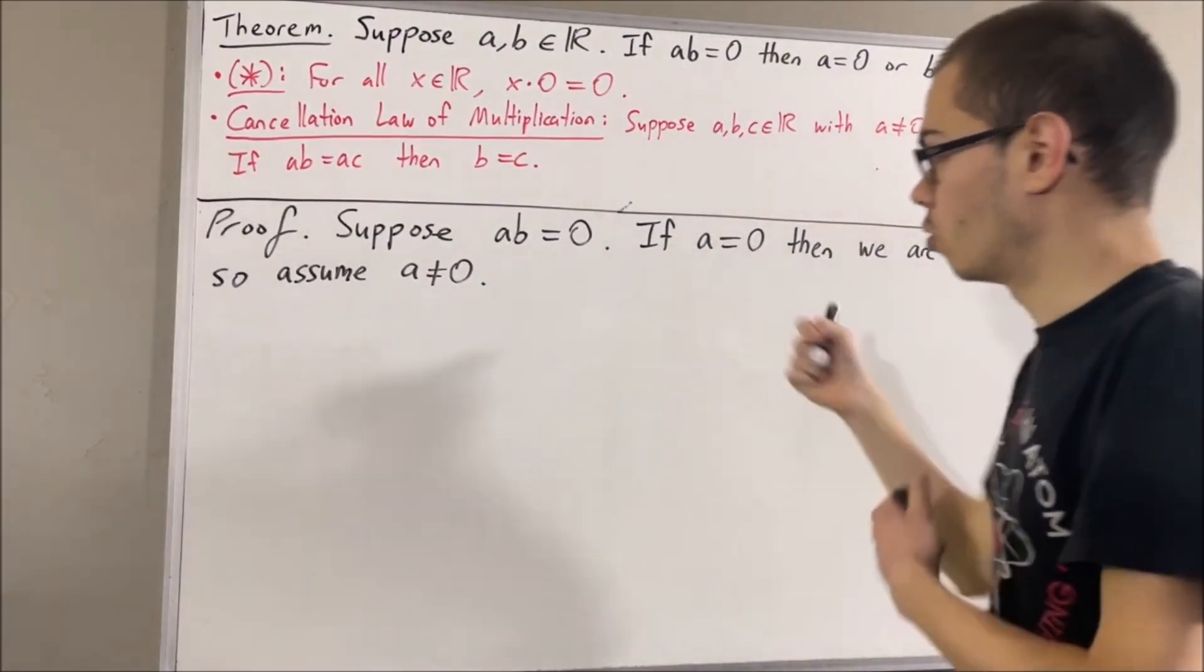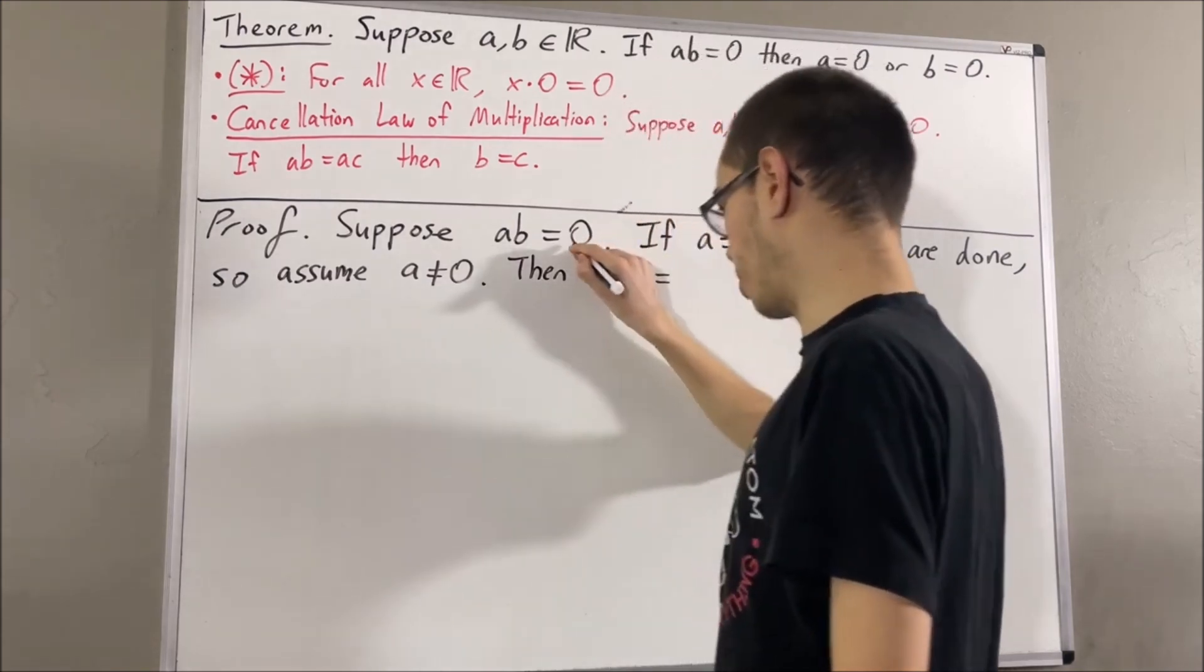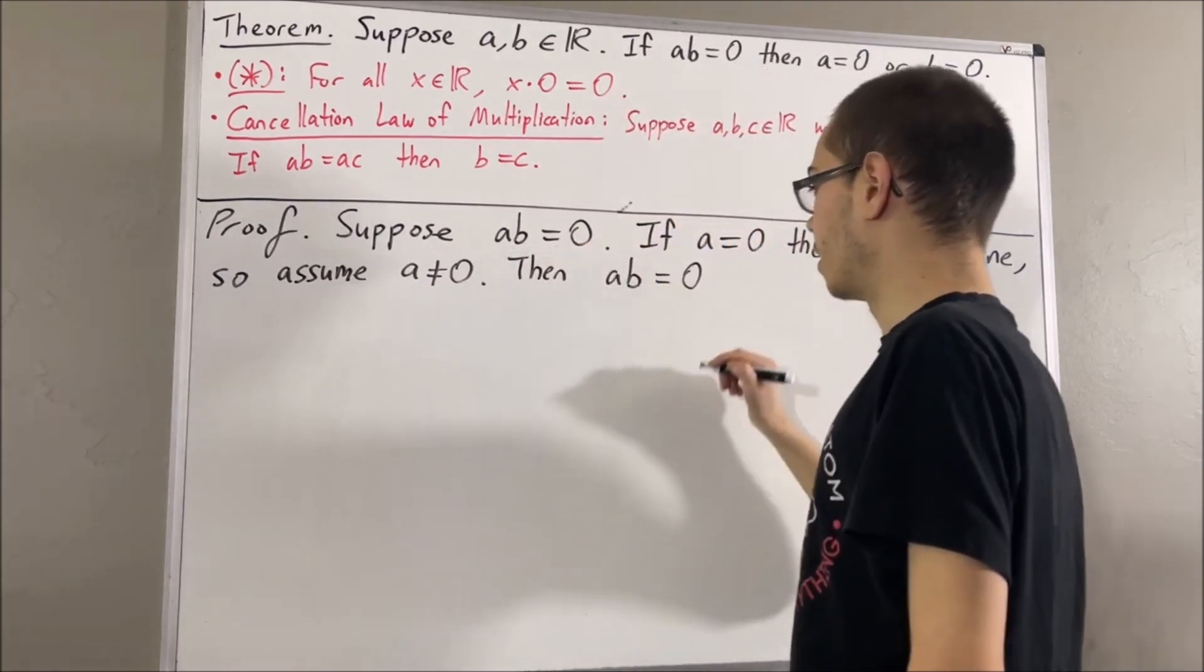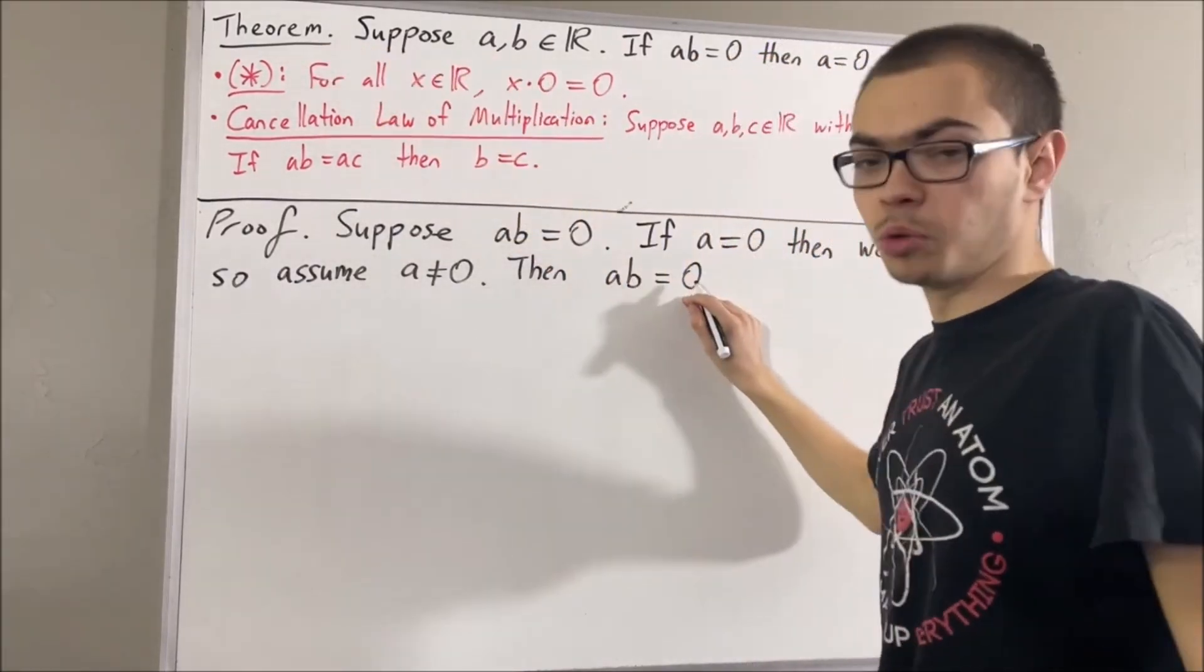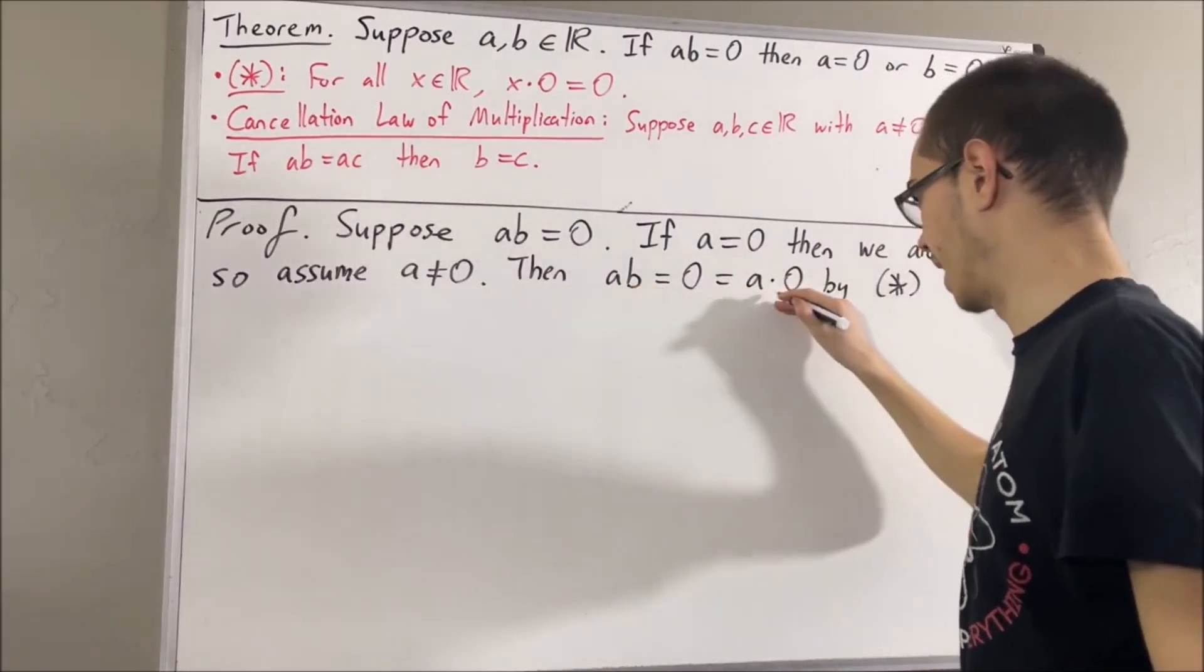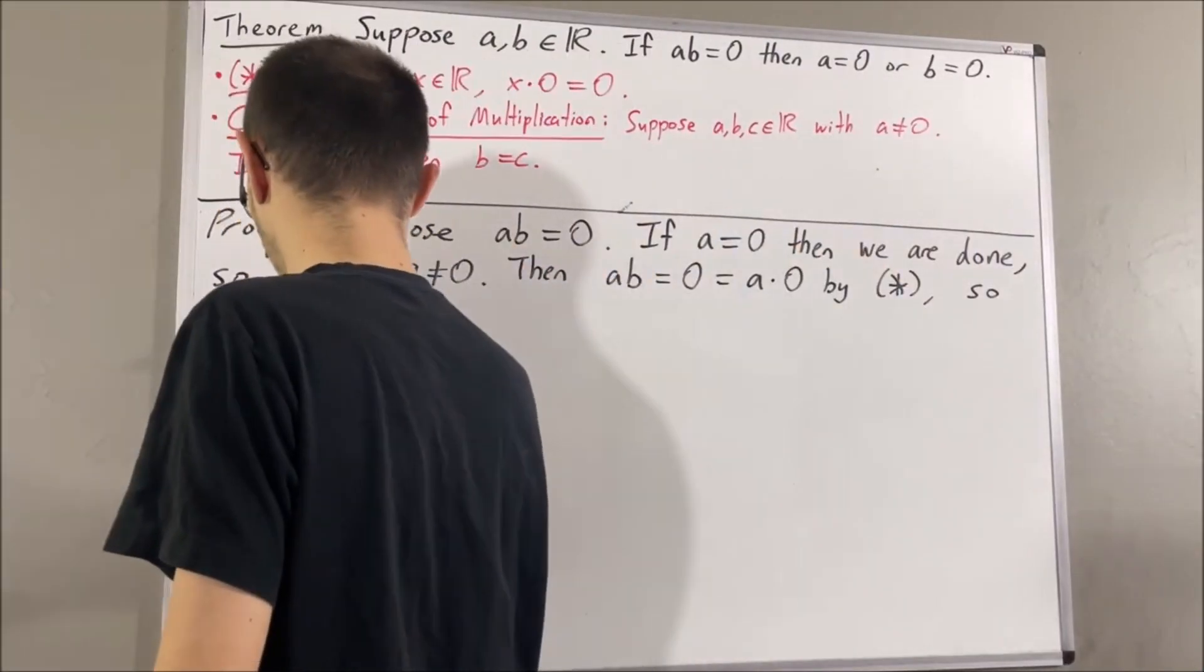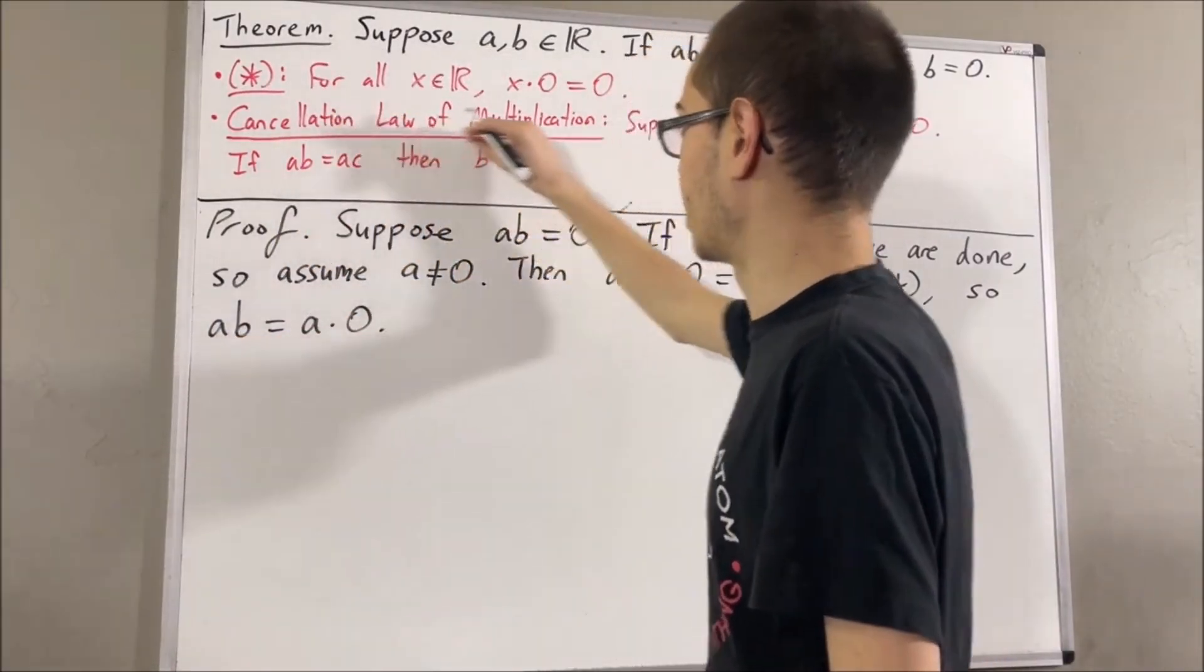And to see how that happens, well, notice we have AB equal to 0 by assumption, but by star, we have 0 equal to A times 0. So, AB is equal to A times 0. And from here, we're in a position to apply the cancellation law of multiplication.